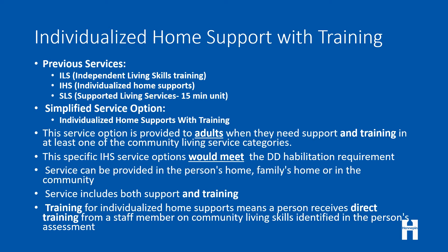Individualized home supports with training — the previous services that fell into this category were independent living skills training, individualized home supports, and supported living services billed in 15-minute units. The new Waiver Reimagined simplified option is called individualized home supports with training. This service option is provided to adults when they need support and training in at least one of the community living service categories. This specific service option would meet the Developmental Disabilities habilitation requirement — teaching, training, challenging the person to be as independent as possible, teaching life skills. The service can be provided in the person's home, family's home, or in the community, and includes both support and training based on the person's assessed needs.